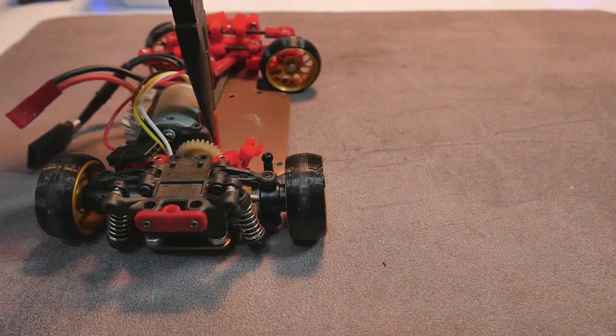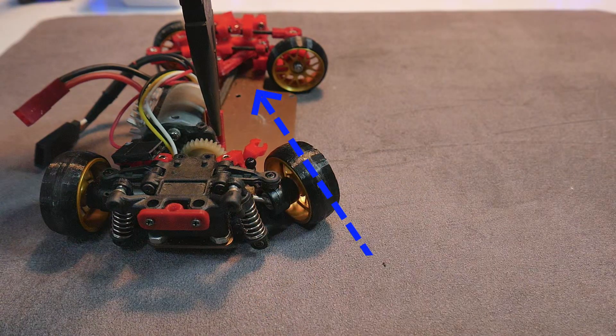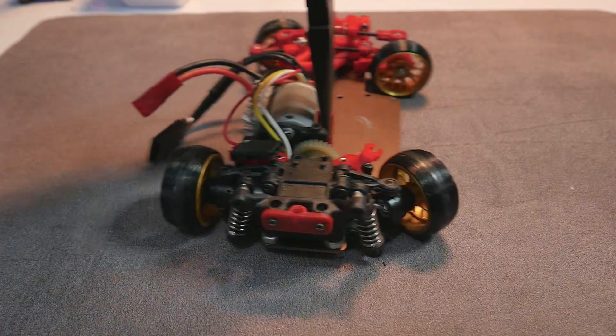On the other hand, with a toe-in rear setting, the rear wheels steer the car toward the angle shown in the video. As a result, the car becomes less prone to over-rotation.